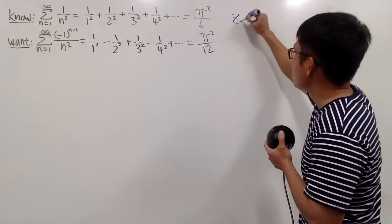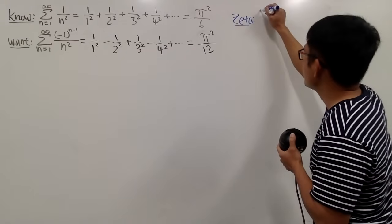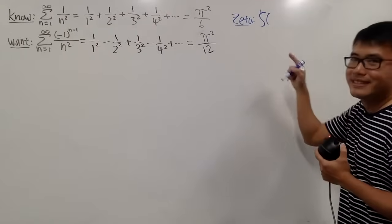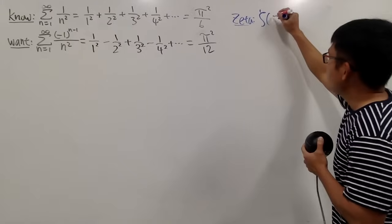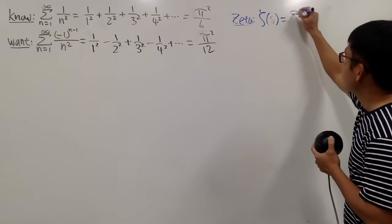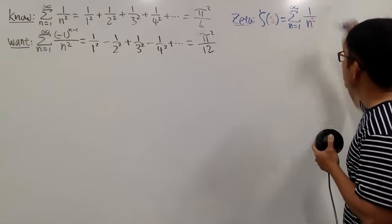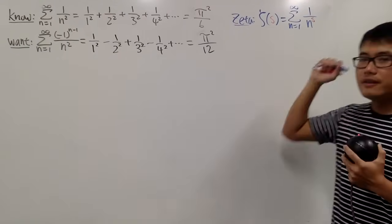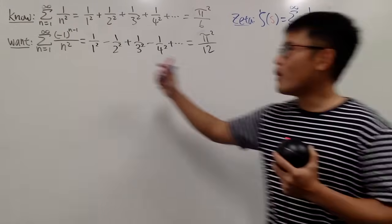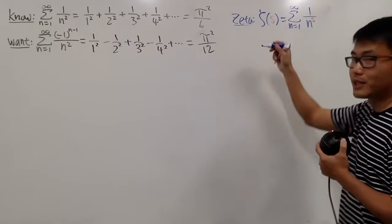So let me write that down. This is called the zeta function, and it's denoted by the theta symbol. The input we'll be using is s. This is defined to be the sum where n goes from 1 to infinity of 1 over n to the s power. This is the really famous Riemann Zeta function. And for this other one, it's just the alternating version of that — and this is called the eta function.